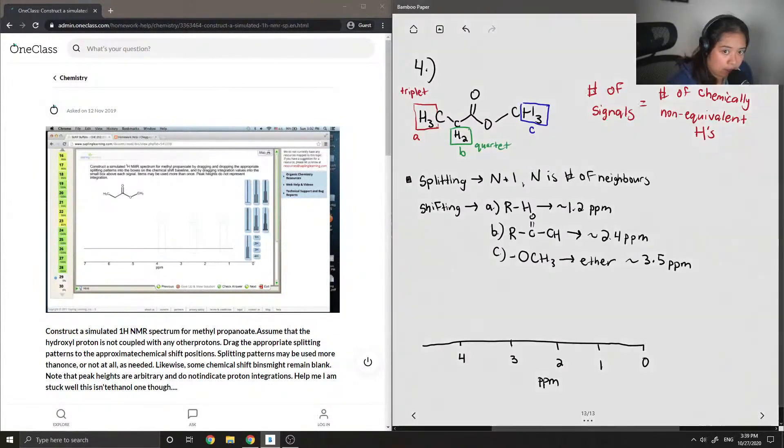And then for the last one, there are no hydrogens on this oxygen. So 0 plus 1, it'll split as a singlet. And then now that I know the splitting patterns, I can put it on the spectrum.